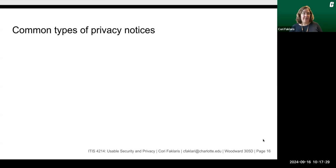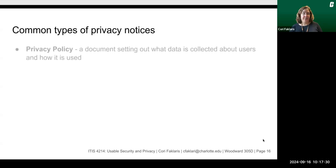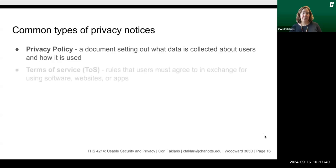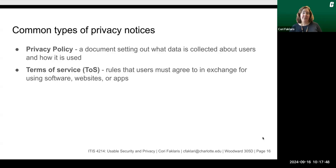Here are some common types of privacy notices. One we've probably all seen is a privacy policy — a document setting out what data is collected about users and how it is used. Then there's the terms of service: rules that users must agree to in exchange for using software, websites, or apps. Examples include who owns any created content and what are the community guidelines.